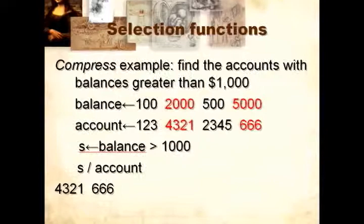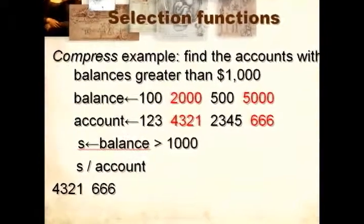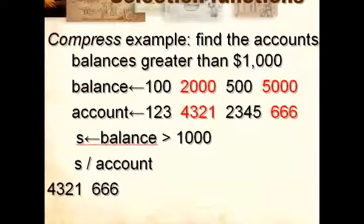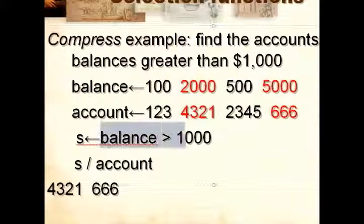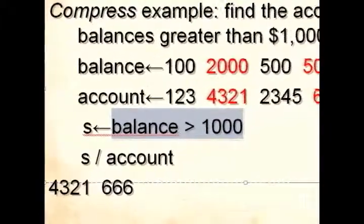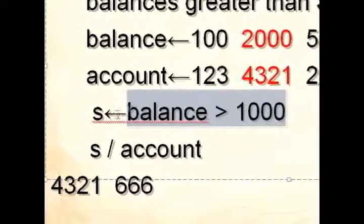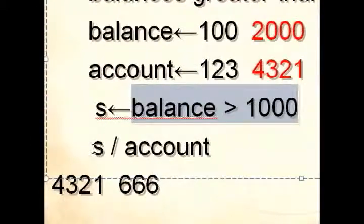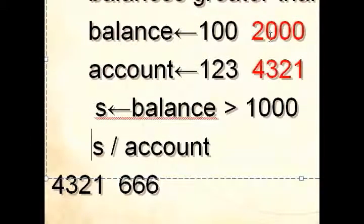Here's an example of using Compress. If we want to find the accounts with balances greater than 1,000, then given the balances and the accounts, we can find which balance is greater than 1,000. S will return a one for 2,000 and 5,000, and then we use it to compress the accounts, returning the accounts for which the balance is greater than 1,000.